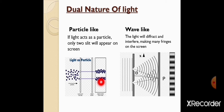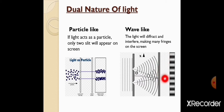Wave-like nature ke andar hum discuss karte hain ki jis tarah se light reflect hoti hai, ya jab light diffract hogi to diffract hone ke baad interfere karegi, aur interference ke baad screen ke upar dark and bright fringes appear ho jayengi. Dark aur bright fringes constructive aur destructive interference phenomena ki wajah se appear hongi.